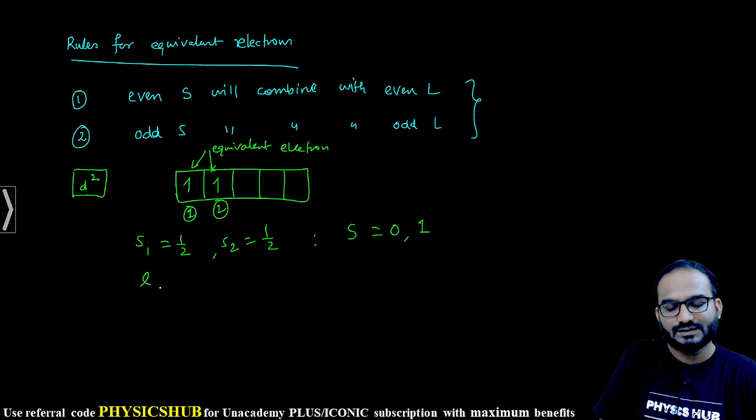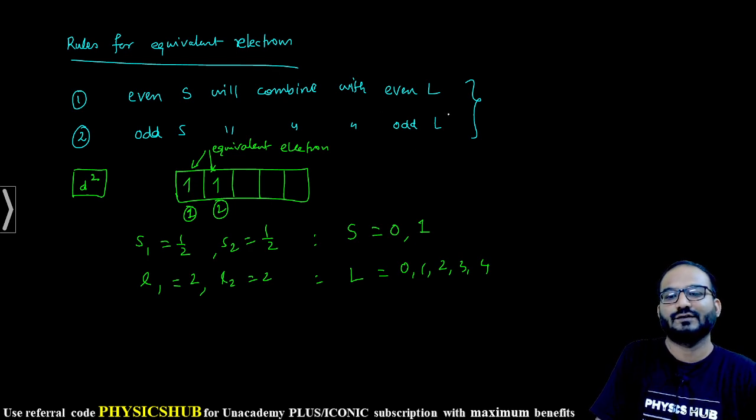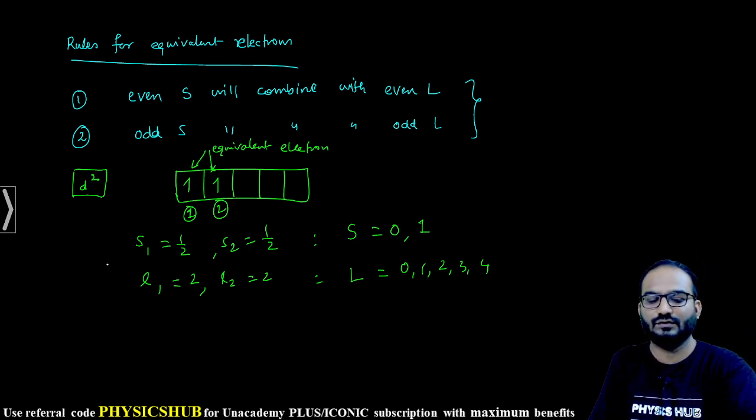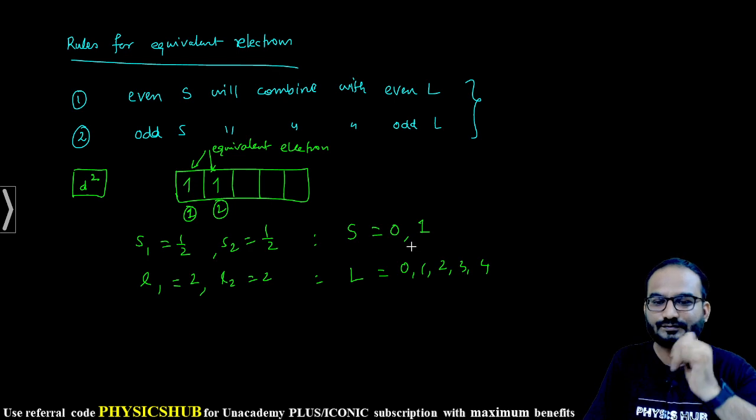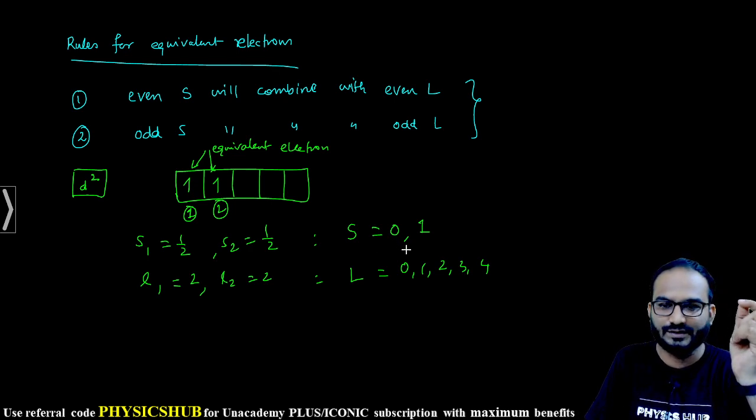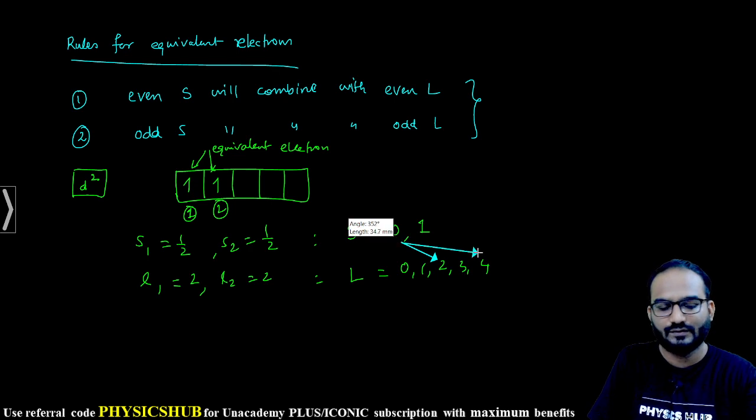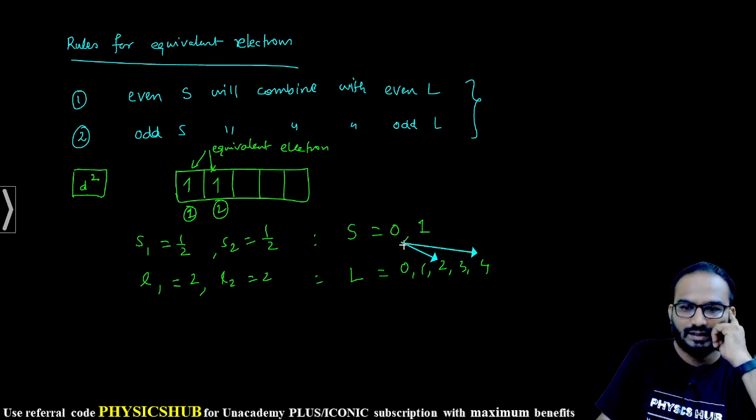For the first electron, orbital quantum number L₁ equals 2. L₂ is also 2. So total quantum number will vary from 2 minus 2 to 2 plus 2: 0, 1, 2, 3, 4. As I told you, even S will combine with even L. So 0 is considered to be even, so 0 will combine with 2 and 4 and 0 as well.